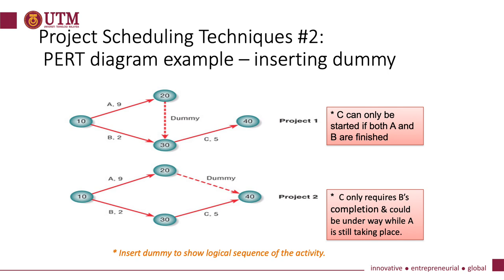Let's look at how PERT diagrams are developed with dummies. The figure shows two PERT diagrams with dummies. Note that project 1 and project 2 are quite different. In project 1, activity C can only be started if both A and B are finished, because all arrows coming into a node must be completed before leaving the node. In project 2, however, activity C requires only activity B's completion and therefore can be underway while activity A is still taking place. You can observe that project 1 takes 14 days to complete, whereas project 2 takes only 9 days.